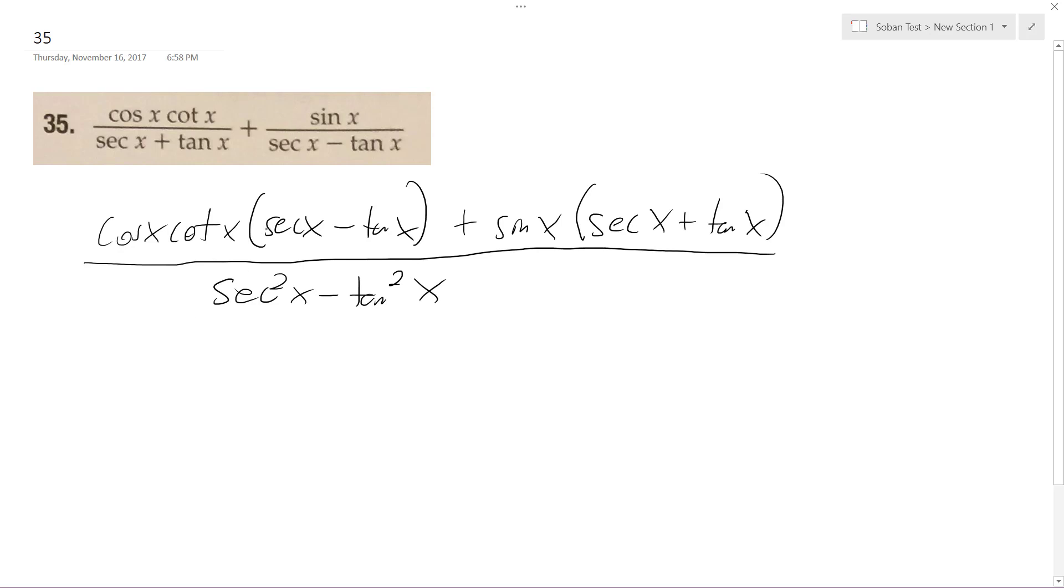So here, distributing this becomes cosine x, secant x, just cotangent x minus cosine x, because tangent and cotangent cancel each other out to one. So plus, this becomes tangent x.